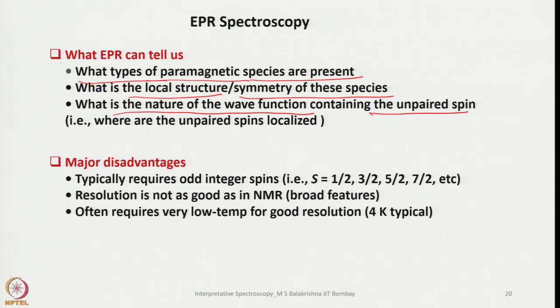The major disadvantages of EPR are: it typically requires odd-integer spins (S = ½, 3/2, 5/2, 7/2, etc.), so diamagnetic species cannot be studied; resolution is not as good as NMR, with broad features observed; and often very low temperatures are required for good resolution, necessitating liquid helium due to fast electron spin relaxation.